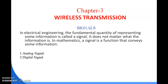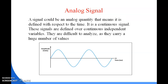Data or information is a hidden thing — how to represent that thing. The signal is one medium; it is the physical representation of that data. Signals are of two types: one is the analog signal and the other is the digital signal.